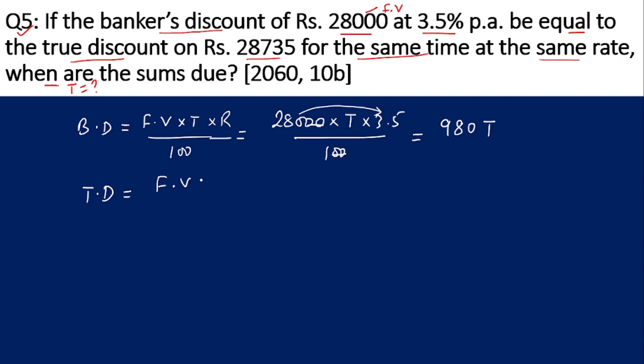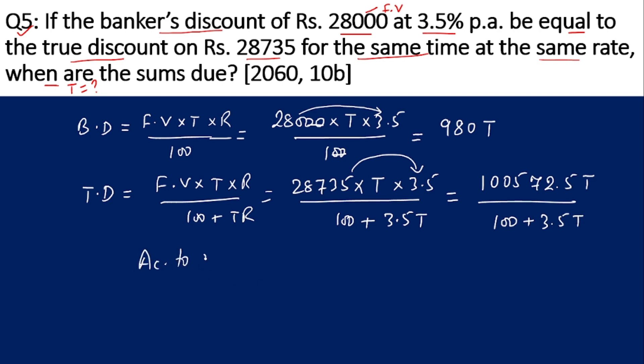Now we find the true discount using the formula FV times T times R divided by 100 plus TR. FV here is 28,735, time is T, rate is 3.5, divided by 100 plus 3.5T. After multiplying, we get 100,572.5T on top, and on the bottom we have 100 plus 3.5T.